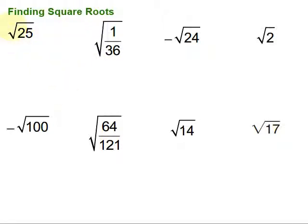First of all, when there's no sign out front of the square root, we assume that we just want the positive one. And then you also might notice that we have some where there's a negative out front, and if that's the case, we want the negative number that when squared would get us that thing that's under the square root.